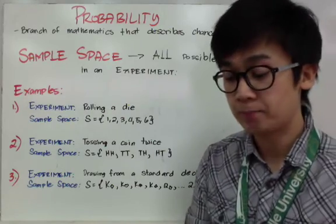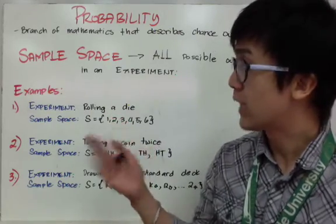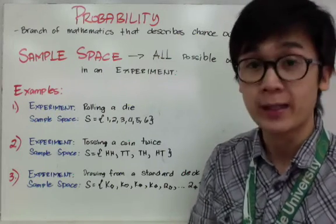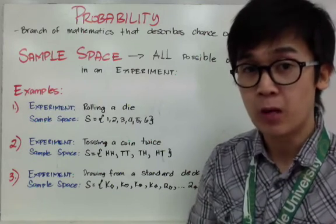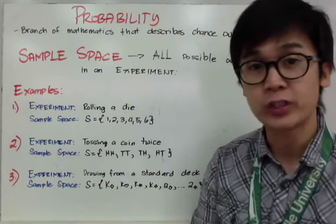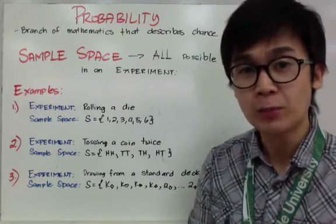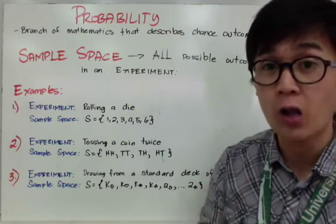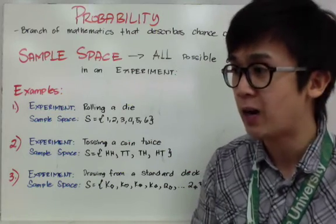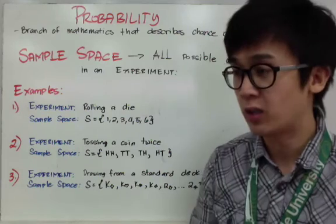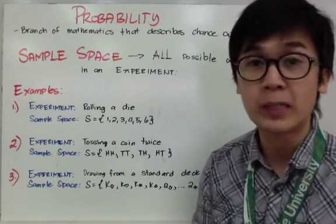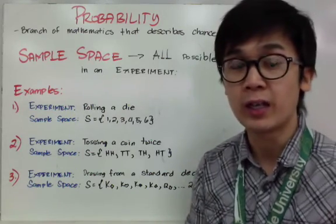First, you need to know the technical terms used in probability. The first technical term is sample space. Sample space is very important in probability — you need to visualize your sample space to be able to answer questions. A sample space is basically the list of all possible outcomes in an experiment. When we talk about experiment in statistics, we don't mean a scientific experiment or surveying people.